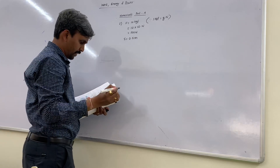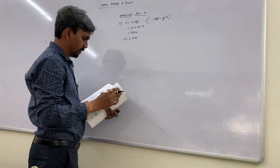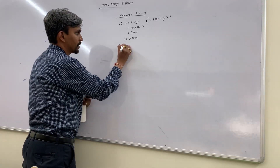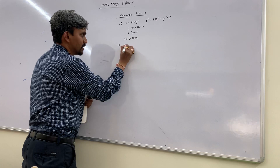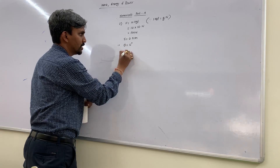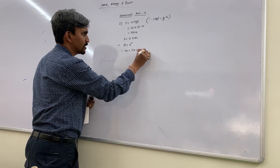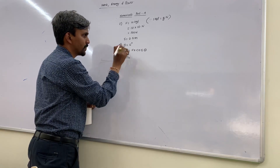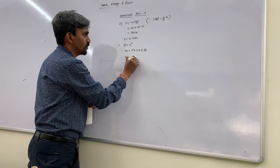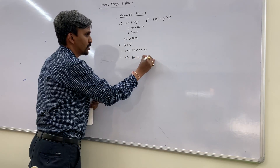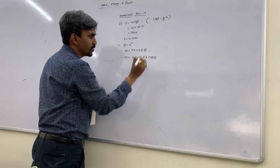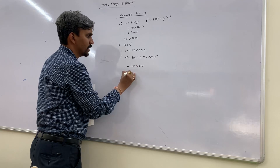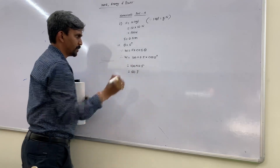First part: theta is given as 0. Write W = Fs·cos θ — that is the general form. So theta is 0, W = 100 × 0.5 × cos 0. Cos 0 is 1, so W = 100 × 0.5 = 50 Joules. This is the first part. Second part: theta is given as 60 degrees, so W = Fs·cos 60 = 100 × 0.5 × cos 60. Cos 60 is half, so this comes out to be 25 Joules.